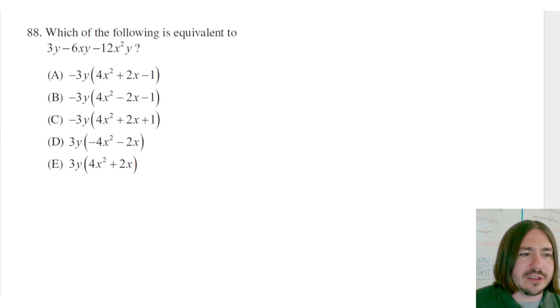I think the easiest way to do this is to think about the factors that we have and then factor it out. Actually, you know what, I take that back. Instead of factoring it out, I think what we do here is just use the distributive property and see which one's equal.